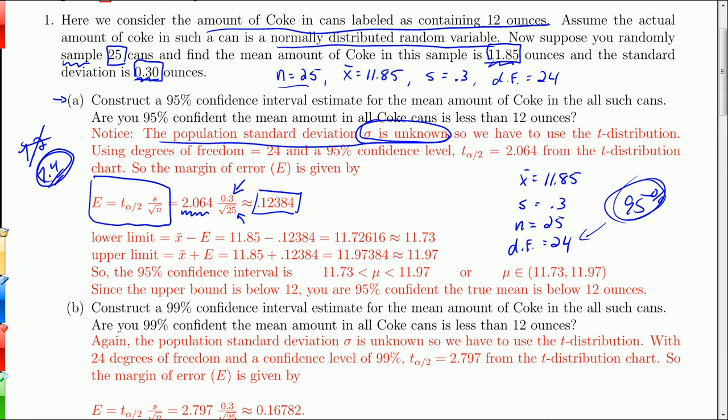And as with every confidence interval in this chapter, we take the sample variable, the sample mean in this case, subtract a margin of error to get the lower limit. Take the sample mean, add a margin of error to get the upper limit. And the lower limit and upper limit create the confidence interval. And I put a mu in there to designate my unknown population mean is between those two values. And I'm 95% confident of that.